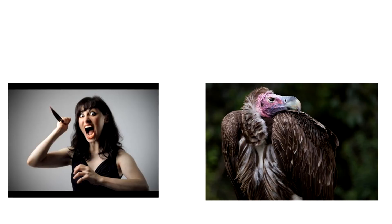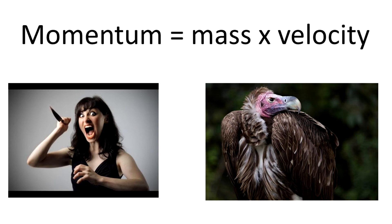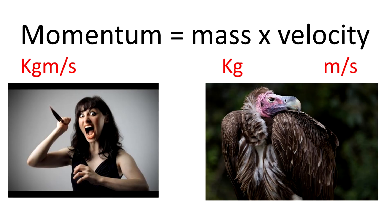This crazy thing here is my mum, although I don't know who the one with the knife is. My mum murders vultures, and that reminds me M equals M times V: momentum equals mass times velocity. The units people traditionally forget are kilogram meters per second — you're multiplying kilograms by meters per second, so just like in maths we slam those units together: kgm/s.